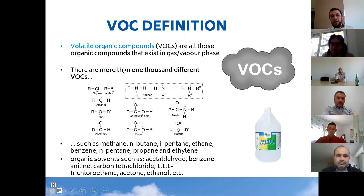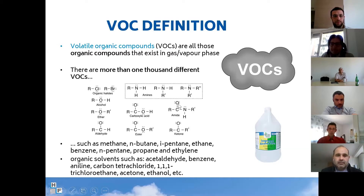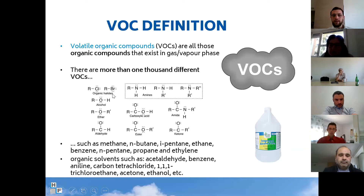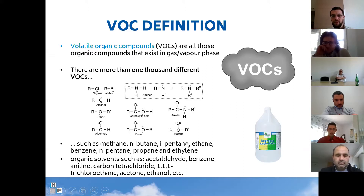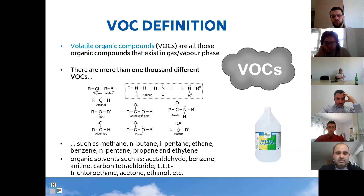So what is a volatile organic compound? By definition, it includes all the organic compounds in gas or vapor phase. Here are some examples of molecules that can be considered organic: halides, amines, acids, ketones, ethers, aldehydes, alcohols — just think about the vapor of alcohols — methane, butane, pentane, and all the hydrocarbons, like the vapors from gasoline, or working conditions involving solvents.